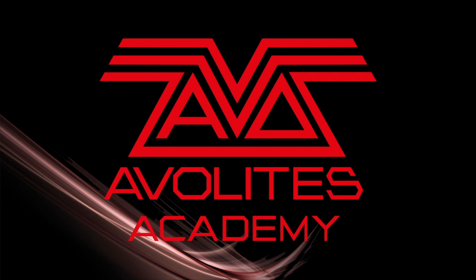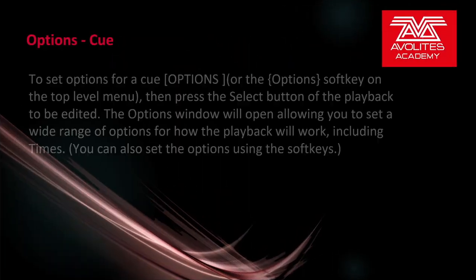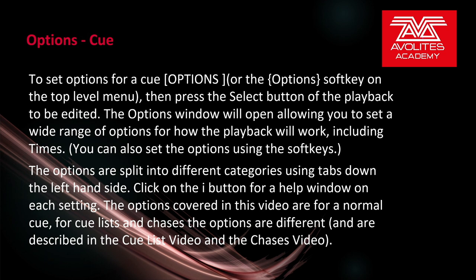Hey everybody and welcome back to Mission Control for another Future Focus video. In this video we're going to talk about options for cues. Instead of options for a cue, we can press the hard options key or the options soft key for the top level of the menu. Then press the select button of the playback to be edited. The options window will open allowing you to set a wide range of options for how the playback will work, including times. You can also set the options using the soft keys. The options are split into different categories using the tabs down the left hand side. Click the i button for a help window on each setting. These options are covered in this video for normal cues. For keyless and chases the options are different and are described in the keyless video and the chases video, which will be linked below.